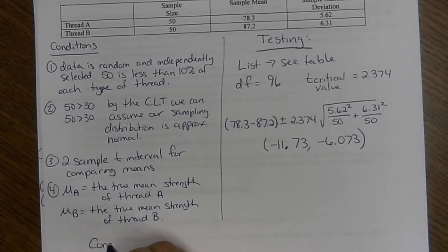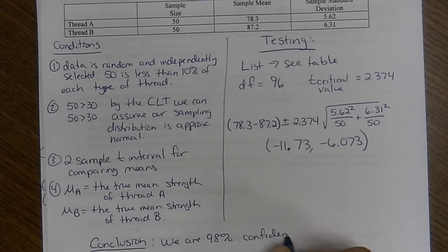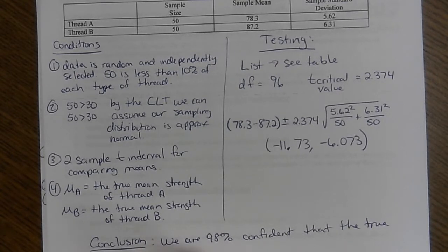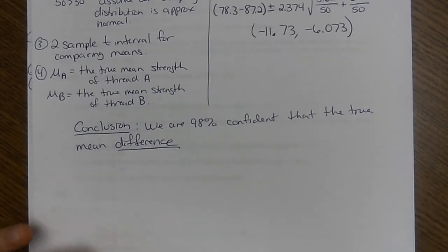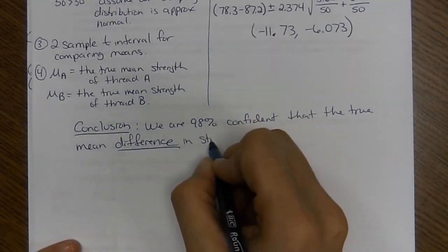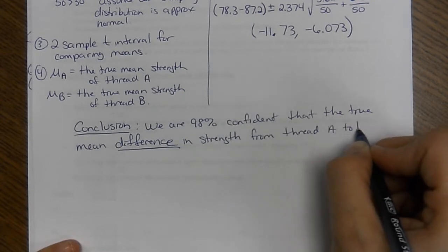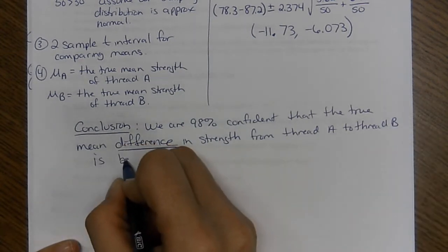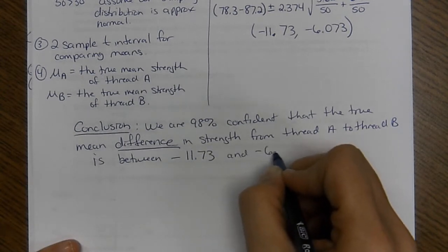So my conclusion. First sentence is the same from chapter 9. We are 98% confident that the true mean difference in strength from thread A to thread B is between negative 11.73 and negative 6.073. I don't know the units, so I'm not going to write these.